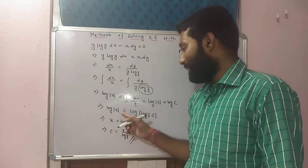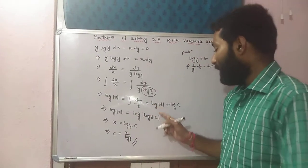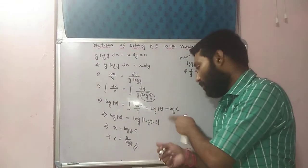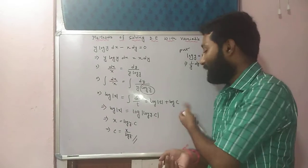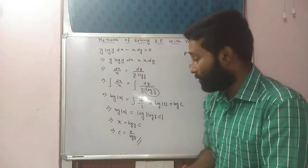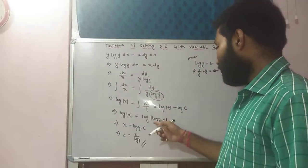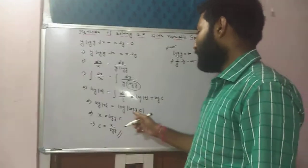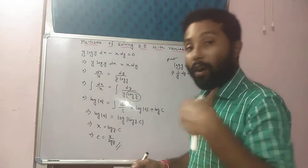Log mod x equals log t plus c. I should write log c. If c is arbitrary constant, log c is also an arbitrary constant. So, after that, I am using the property of log a plus log b, that is log of a into b. Or,